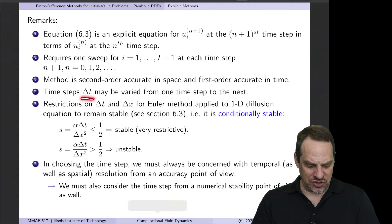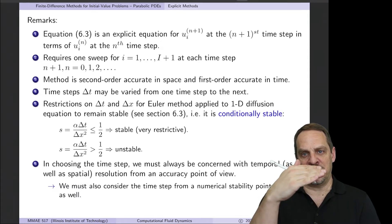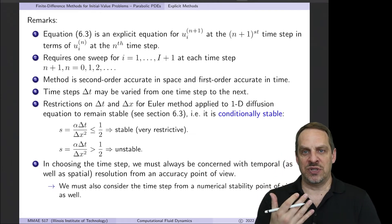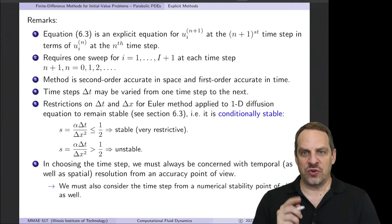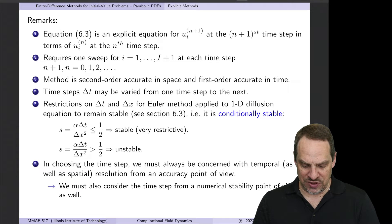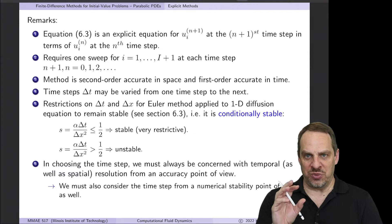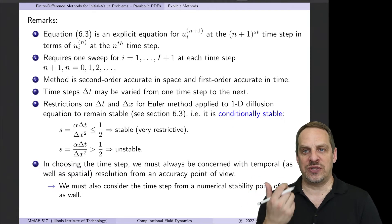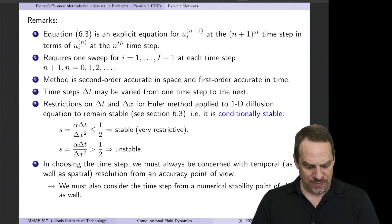There are restrictions on Δt and Δx for this method — we say it is conditionally stable. We'll discuss how to evaluate numerical stability in the next video; for now I'll just give the result. The condition is that s = αΔt/Δx² must be less than or equal to 1/2 for the solution to be stable.